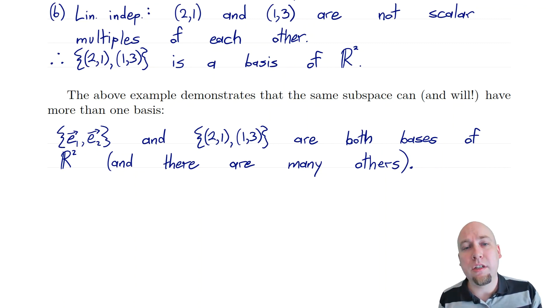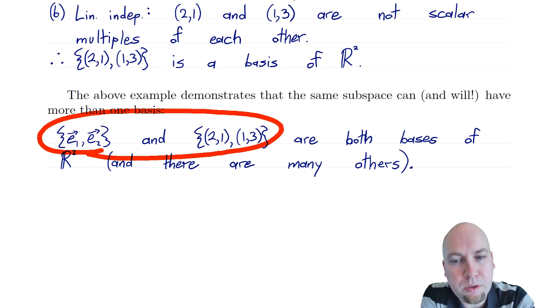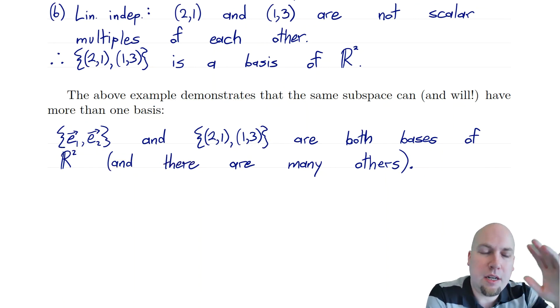Next class, what we're going to do is we're going to start looking at properties of bases and start seeing what we can do with them. And in particular, we're going to see that even though subspaces can have lots of different bases, they're all going to have the same size. So this pull and push between spanning and linear independence, they always meet in the middle at the exact same size. You're never going to have a basis of two vectors and a basis of three vectors of the same subspace. It just can't happen. So for example, the fact that both of these bases here have two vectors, that's not a coincidence. If one basis has two vectors, then every basis of that subspace has to have two vectors. So we'll start talking about that next class and consequences of that fact. So I'll see you then.